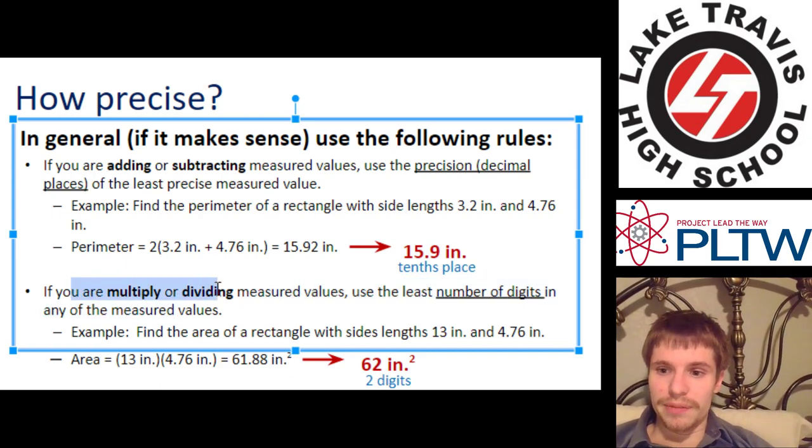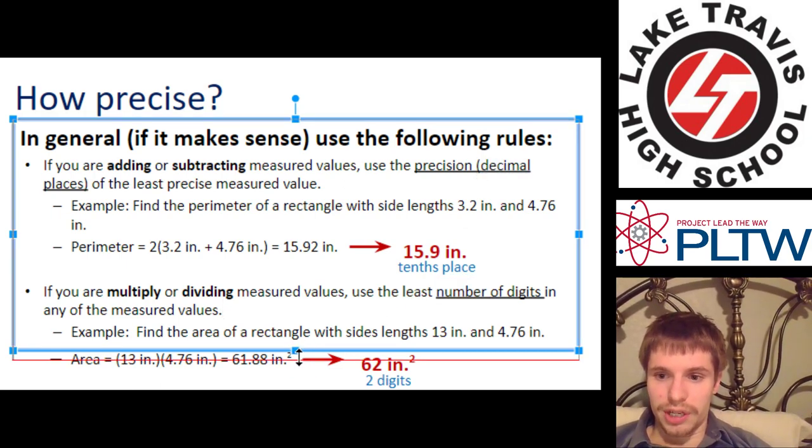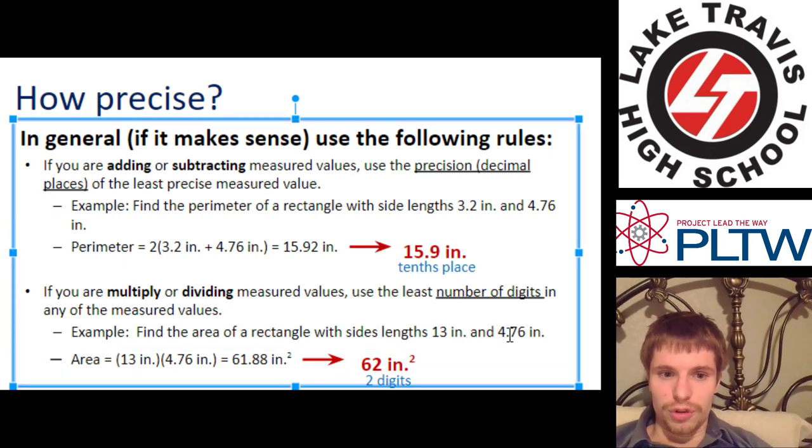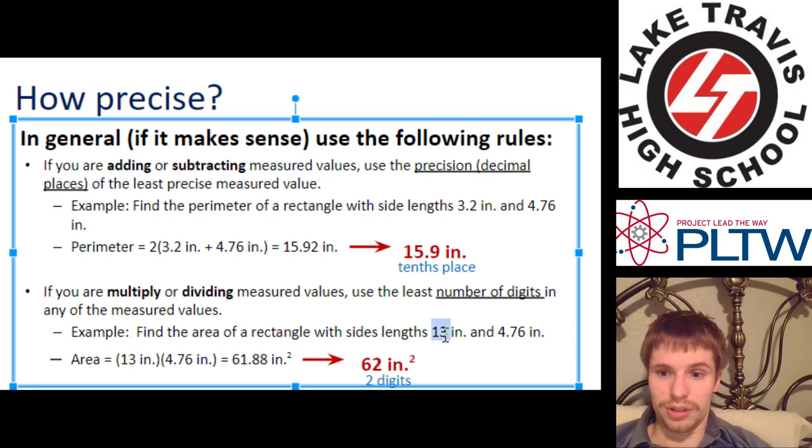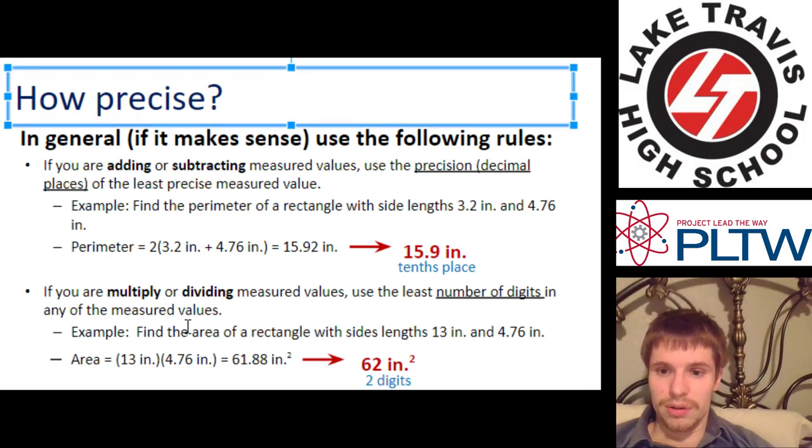But now when multiplying and dividing, you round to the number of digits. And again, use the least precise value. But consider number of digits instead of decimal places when multiplying and dividing. So I've got two numbers here. 13 and 4.76. How many digits does this one have? It's three. How many digits does this one have? Two. So we consider the one with the least number of digits. Two digits. When we calculate and find our answer, we have four digits here. We round to the nearest two digits because our least precise value here has two digits for multiplying and dividing.